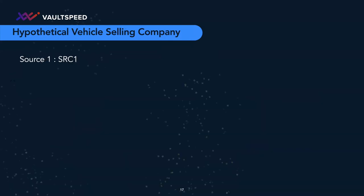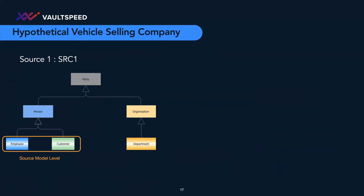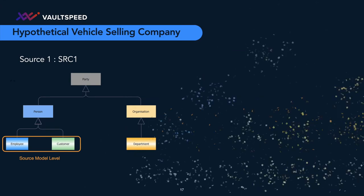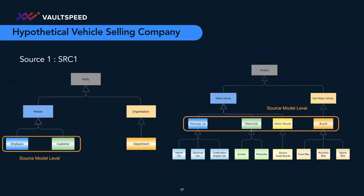In source one, the business model level and the source model are on the same level — also at the level of employee and customer. On the other hand, there is a difference between the conceptual model level and the actual source level in the products taxonomy: it's passenger car and motorcycle, so it's at the third level, while our conceptual model is at the product level. In the second source, customers are again the same, and products are at motor vehicles and non-motor vehicles — the second level. So you have different levels in the taxonomy coming from different sources, and that's why you need the taxonomy: to know these elements are part of the product taxonomy and to classify them under the right product.